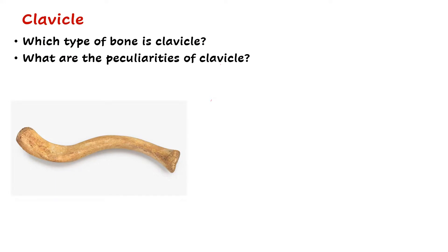When you pick up clavicle during Viva Voce examination, the first question often asked is which type of bone is clavicle? The answer is it is a modified long bone. It is called a long bone because it is involved in weight transmission - all long bones are involved in weight transmission. It is called modified because it does not have a medullary cavity.